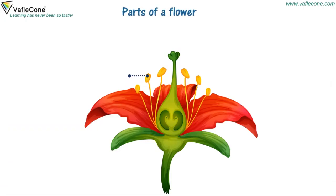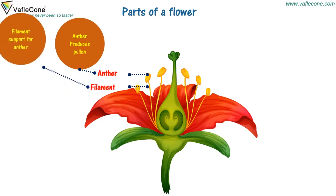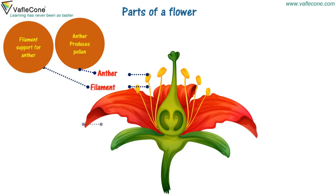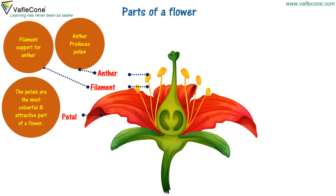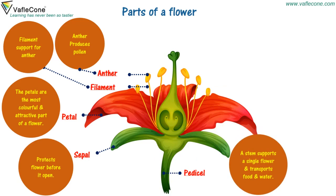Parts of a flower. The anther produces pollen. The filament is a support for the anther. The petals are the most colourful and attractive part of a flower. The sepal protects the flower before it is opened.